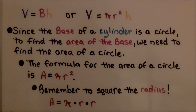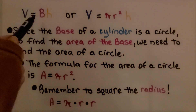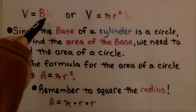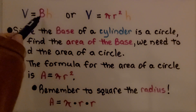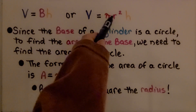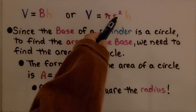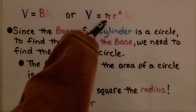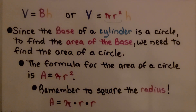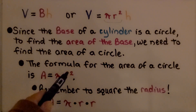We've learned that the formula for the volume of a cylinder is V equals base times height, or if we don't know the base, we can use pi r squared for the area of a circle times the height. And since the base of a cylinder is a circle, to find the area of the base, we need to find the area of a circle. The formula for the area of a circle is pi r squared.